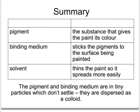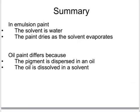In summary, the three main parts of a paint are: the pigment, which gives the paint its colour; the binding medium, which sticks the pigment to the surface being painted; and the solvent, which thins the paint to make it spread more easily and evaporates as the paint dries. In emulsion paint the solvent is water, whereas in oil paint the solvent is not water — it's usually an ester. Oil paint also contains an oil which is dissolved in the solvent. Both paints dry by the solvent evaporating.